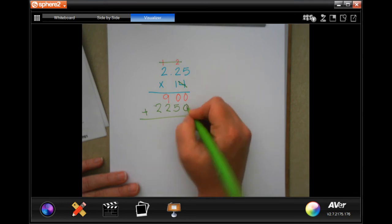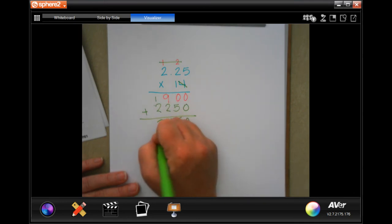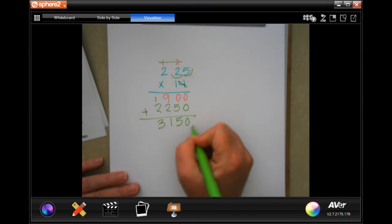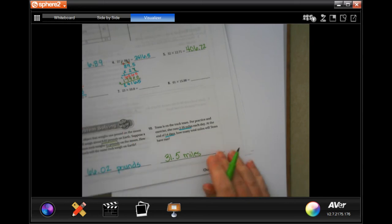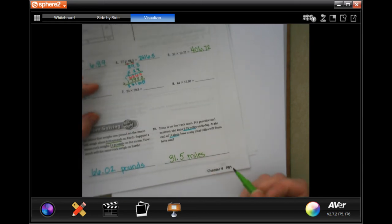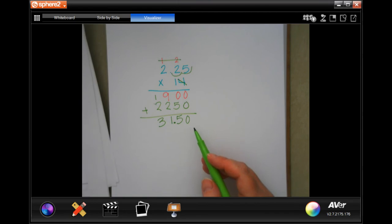So and then 1 times 2.25 is. I'm going to write it backwards so that I keep my placing. Is 2.25. So now I just need to add them up. 0, 5, 11, carry the 1, and 3. Now I went in 1, 2 places here. 1, 2, 31.5 miles. You can write that extra zero if you want to. You just don't have to at the end of a decimal.